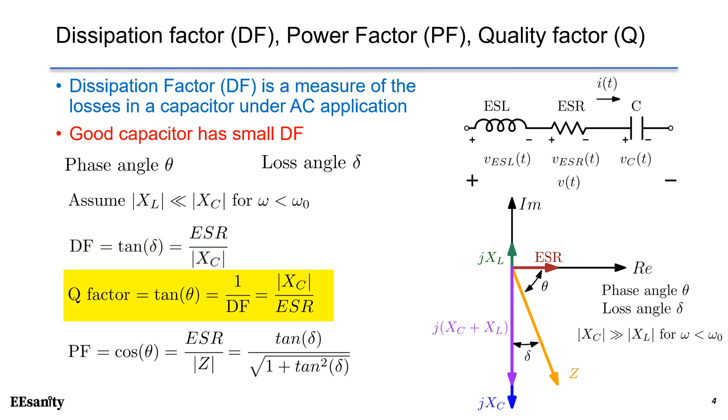Based on that, dissipation factor is defined as tangent of δ equals to ESR over the magnitude of Xc. Q factor is tangent of θ, which is 1 over DF. Finally, the power factor is cosine of θ equals to ESR over the magnitude of Z.